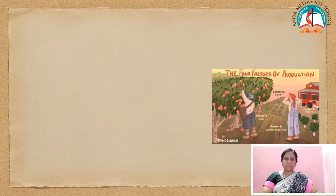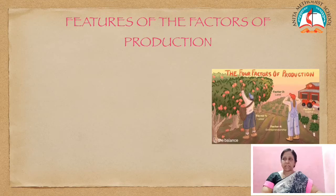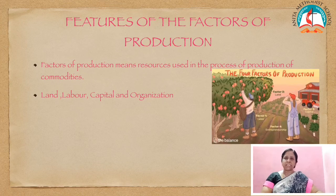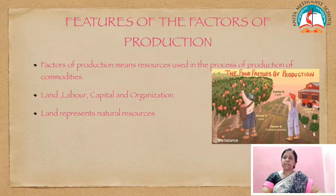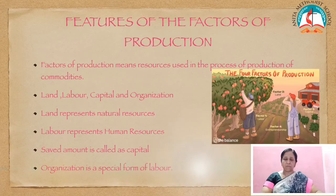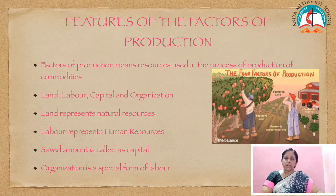Shall we learn about the features of the factors of production? The factors of production means resources used in the production process of commodities. There are four factors of production: land, labor, capital, and organization. Land represents natural resources — all the sea, river, mountain, forest, etc. Labor represents human resources. Land and labor represent the primary factors of production. Saved amount is called capital, and it can be used as investment in the production process. An organization or enterprise is a special form of labor. Capital and organization are called the secondary factors of production. All four factors depend on each other and play an important role in the production process.